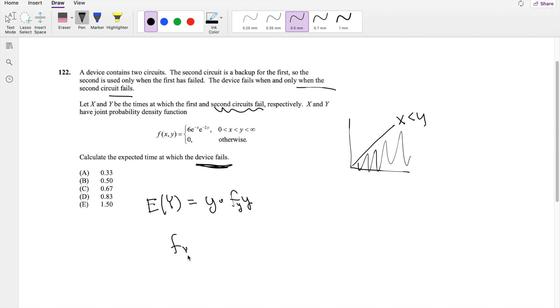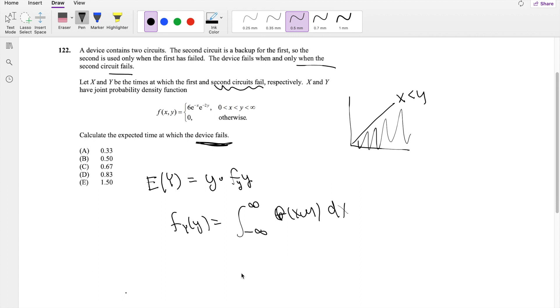So f(y) is equal to, by definition, the integral from negative infinity to infinity of f(x,y) dx. So what range does x exist on? Well, x exists on 0 to y. So that's going from 0 to y of f(x,y), which is 6e^(-x) e^(-2y) dx.